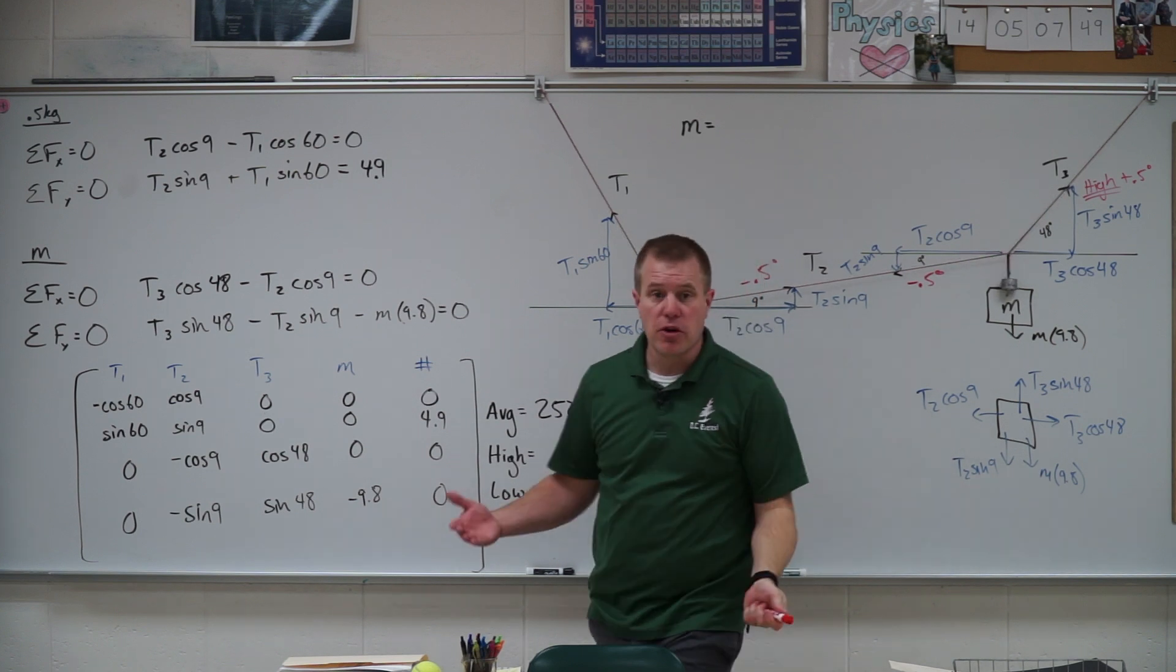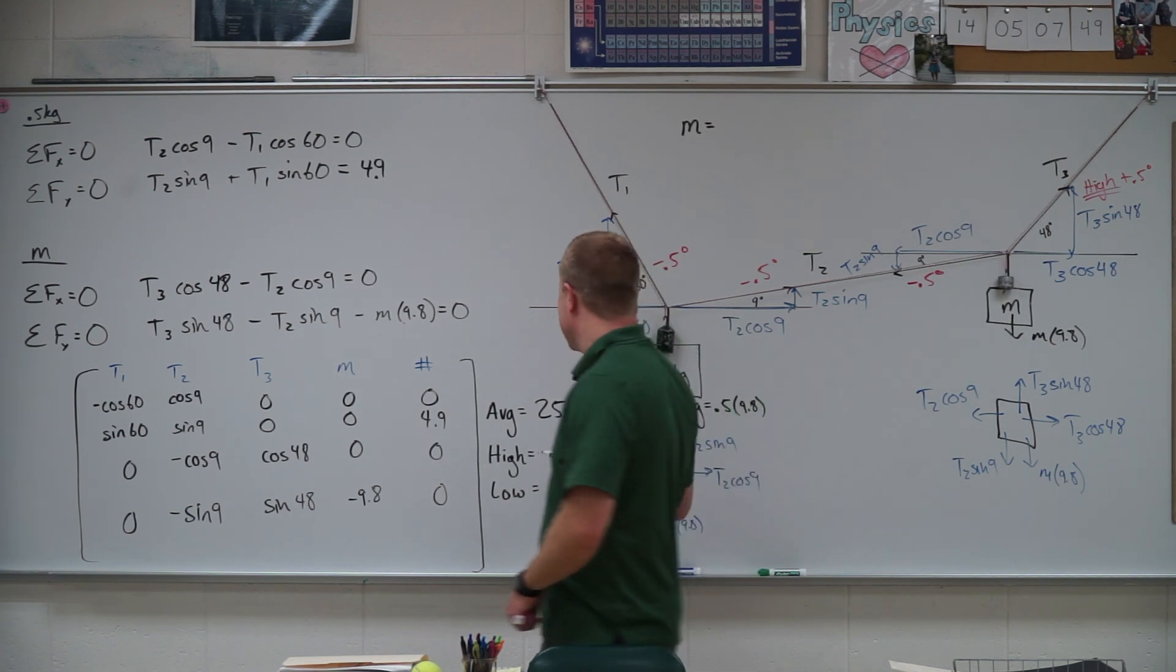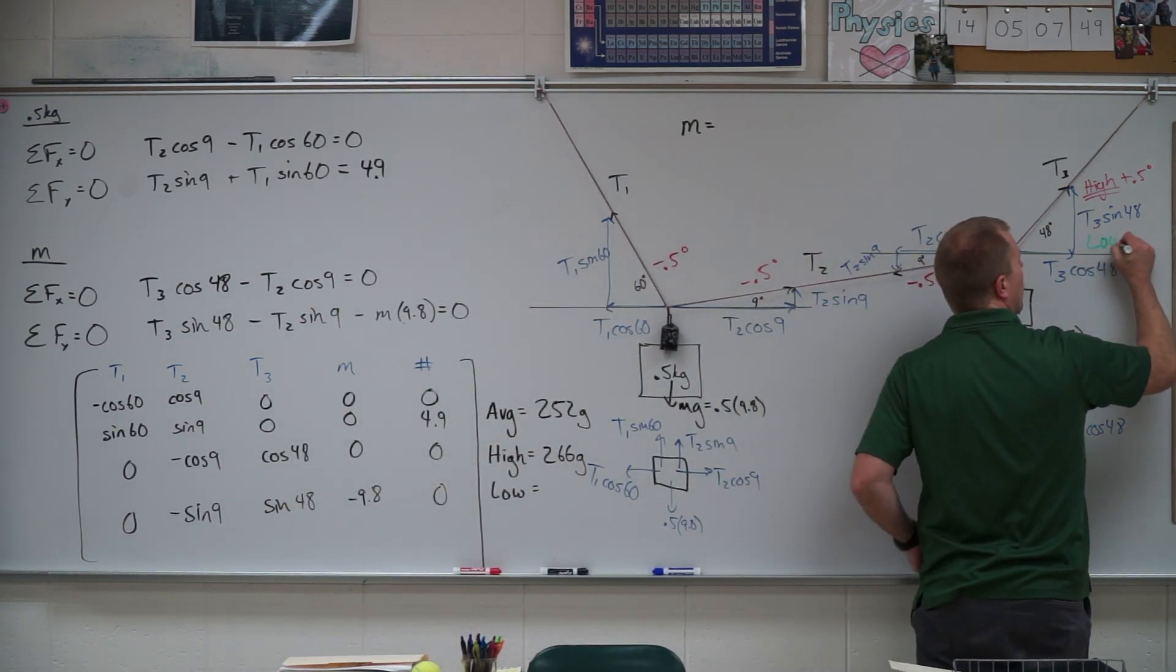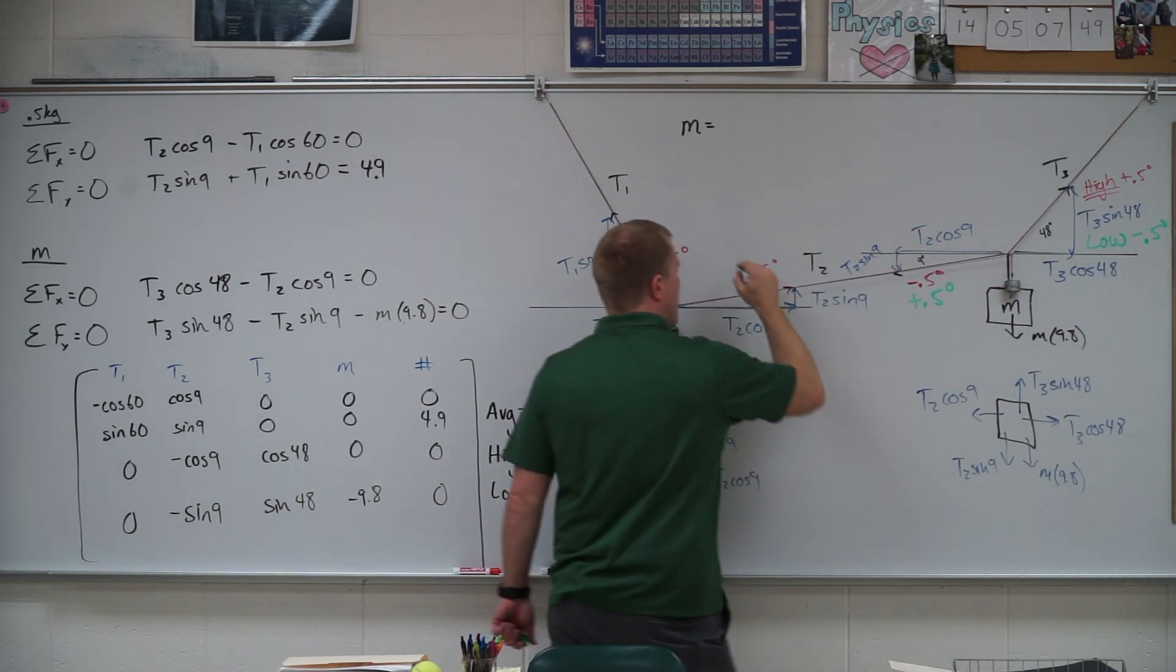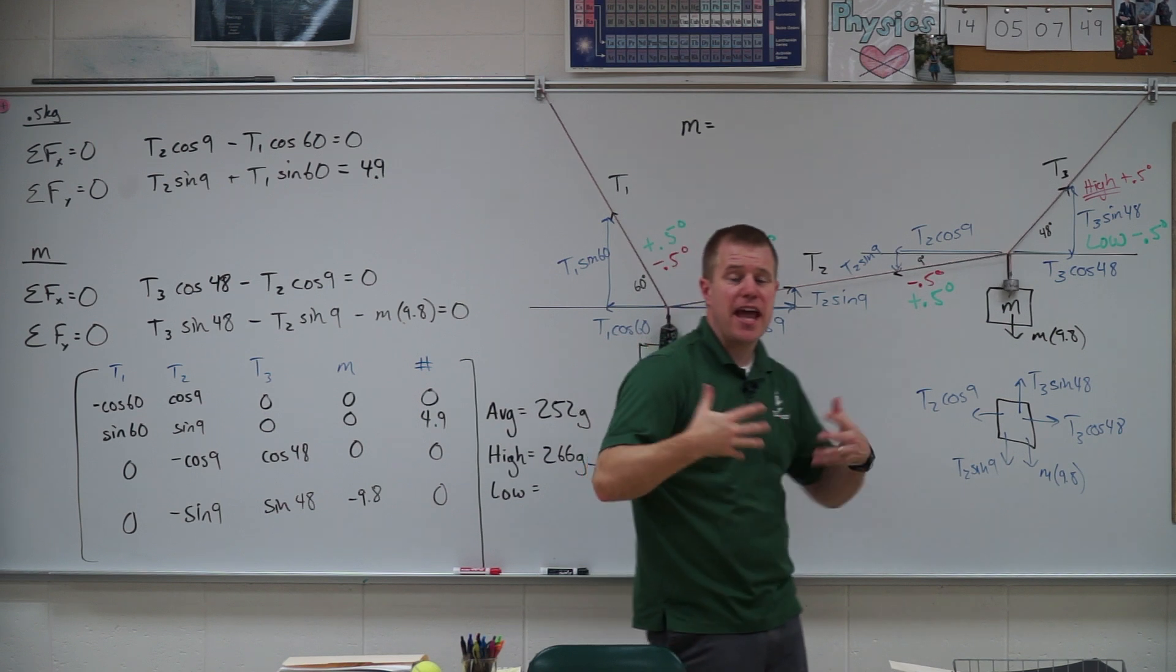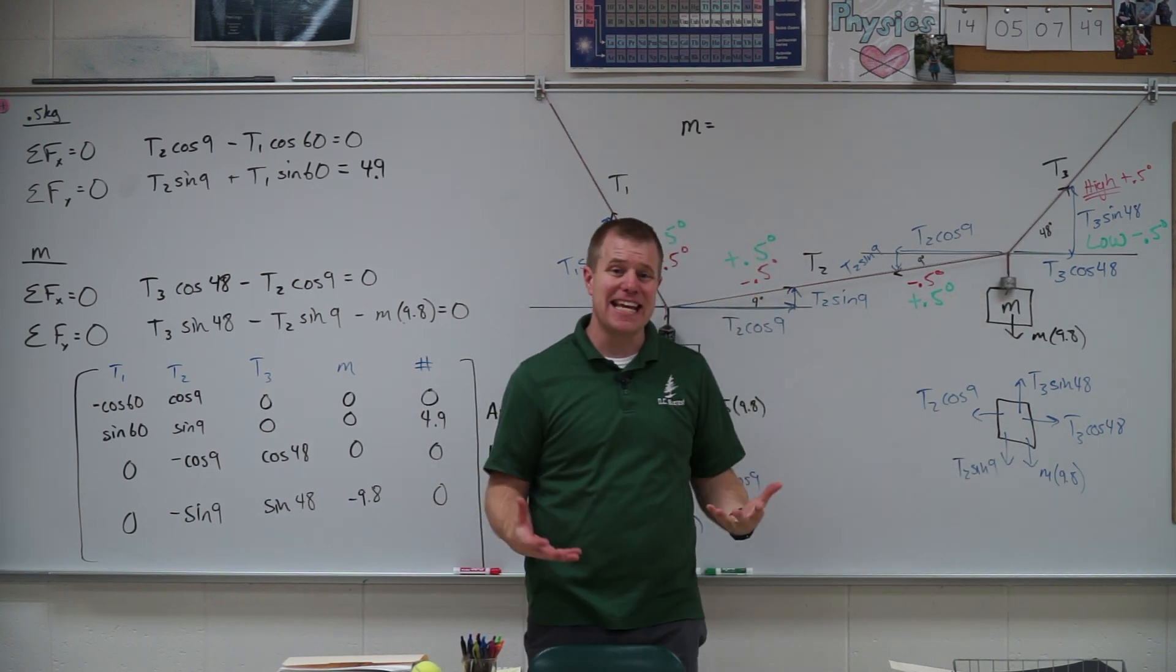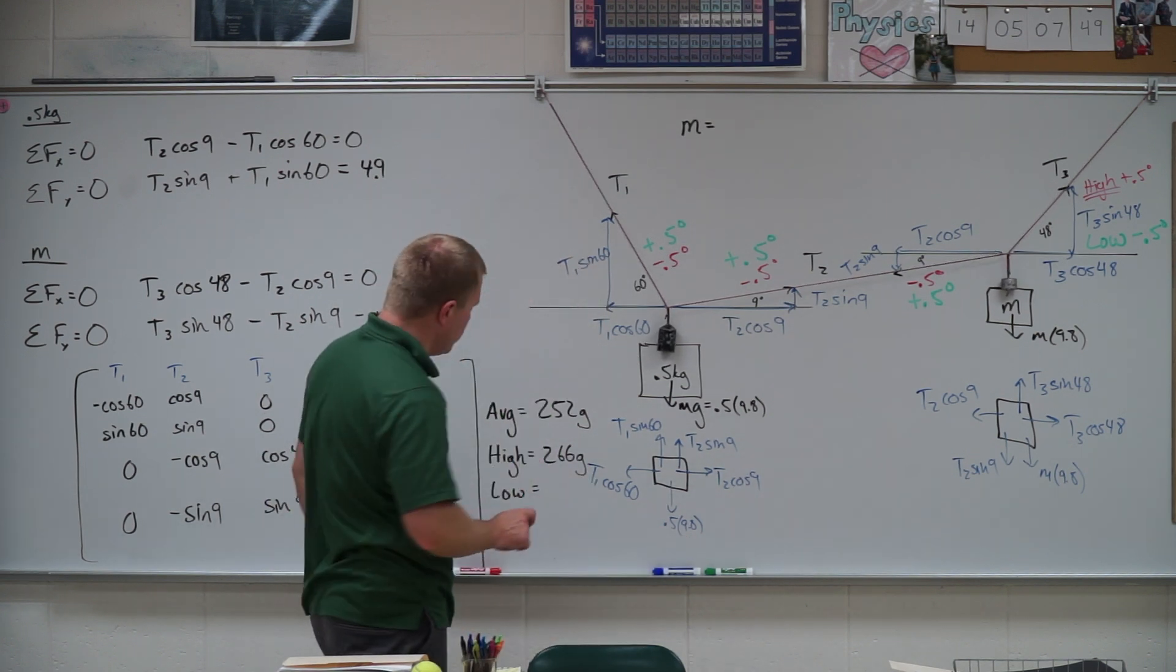So to get my high value, what I'm going to have to do is I'm going to have to redo those calculations, but now with like 59.5, 8.5, 8.5, and 48.5. So let's go ahead and do those calculations. So I already did them, of course, and I got something like 266. So I have 266 grams for a high. Now I'm going to do it for the low, and that's going to be the exact opposite. So to do the low values, I'm going to have to subtract 0.5 degrees, add 0.5 degrees, add 0.5 degrees, add 0.5 degrees.